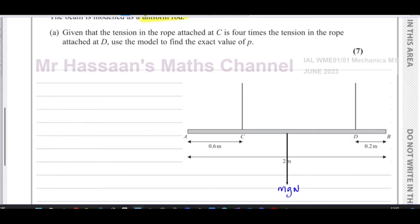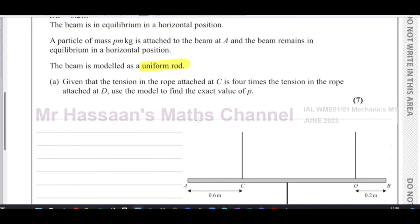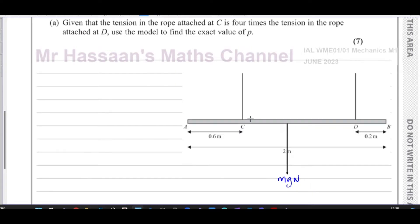We have a weight attached - a particle of mass P. So there's a particle attached at A and its mass is Pm, so it's Pmg newtons. Pm is the mass times g that makes it the weight. So those are the forces acting.